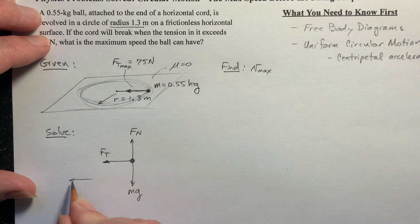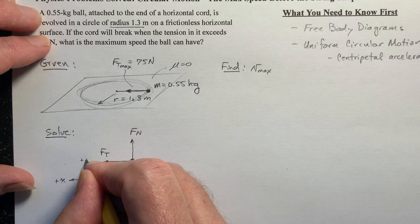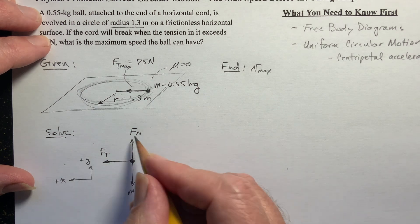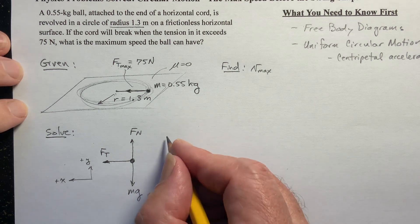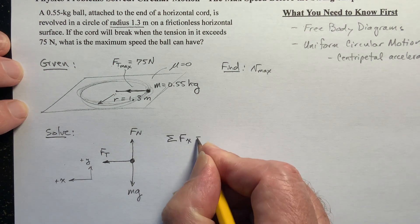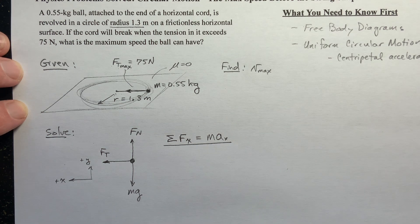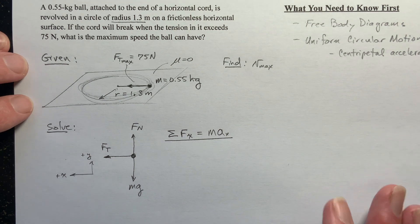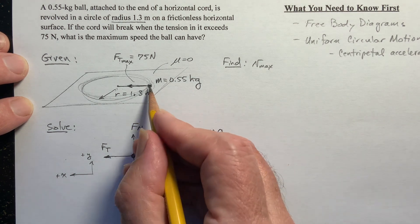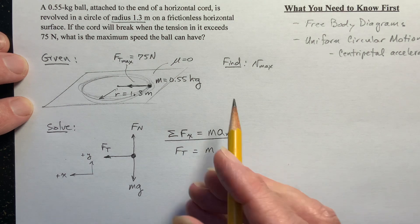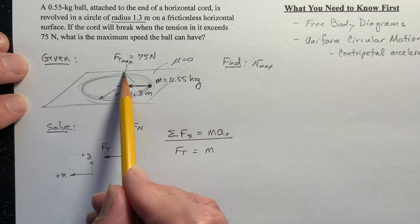Now I usually, if I know the direction of the acceleration, I make that positive x. And we'll make this positive y. And all the forces are aligned with my x, y axis. So that's good. And now I can sum the forces in the x-direction and set that equal to ma in the x-direction. There's only one force and that's that tension force. And it's going to be equal to the mass of the ball times the acceleration. But what kind of acceleration makes us go in a circle?